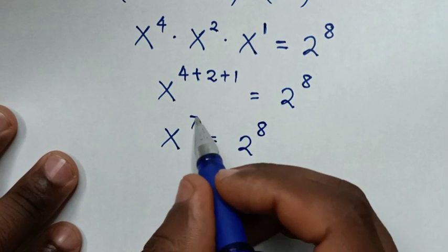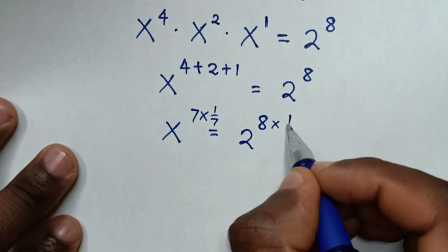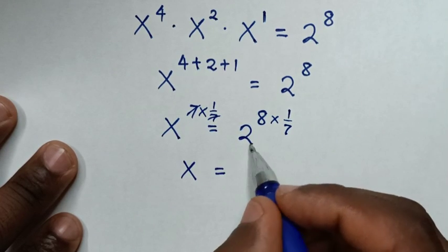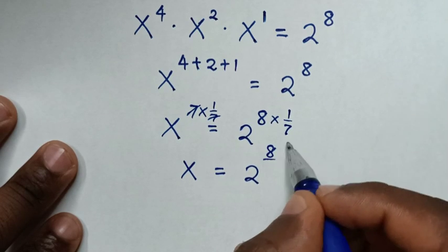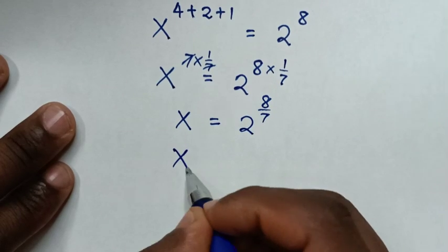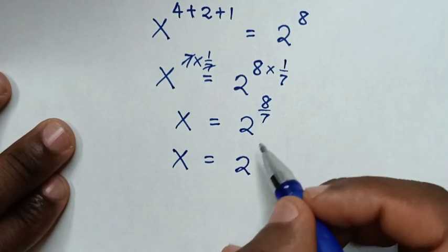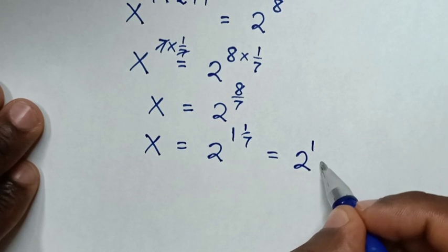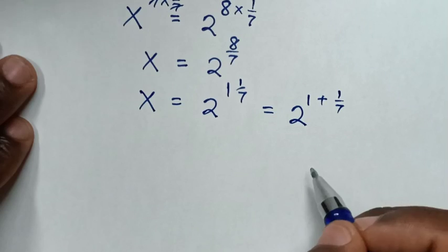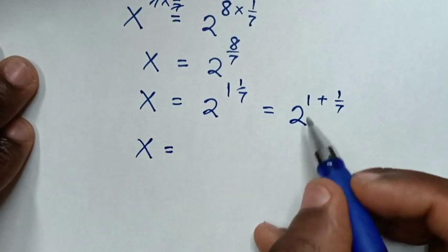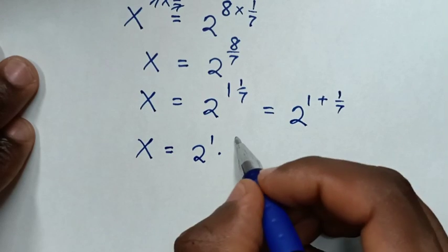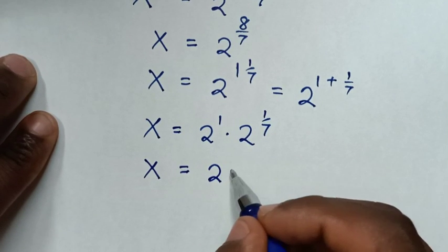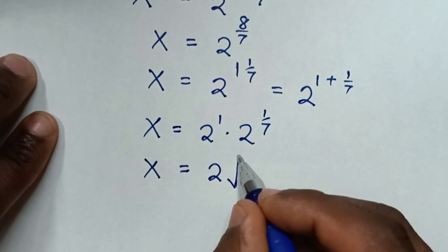Now to remove this power of 7 and find the value of x, we will multiply by power of 1 over 7 on both sides. This 7 and the exponent cancel, giving x to the power of 1, which is just x, equal to 2 to the power of 8 times 1 over 7, which is 8 over 7. So x equals 2 to the power of 8/7, which we can write as 2 to the power of 1 plus 1/7, which equals 2 to the power of 1 times 2 to the power of 1/7, giving x equals 2 times the 7th root of 2.